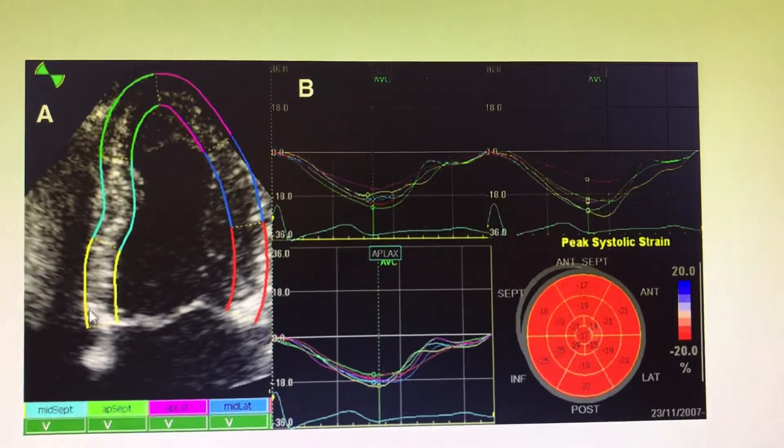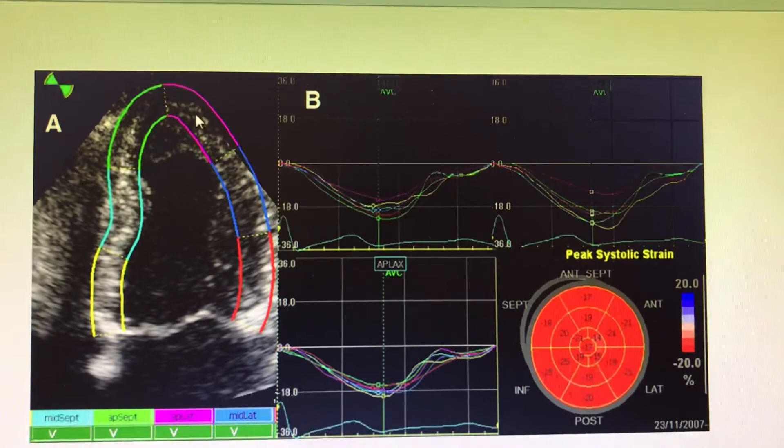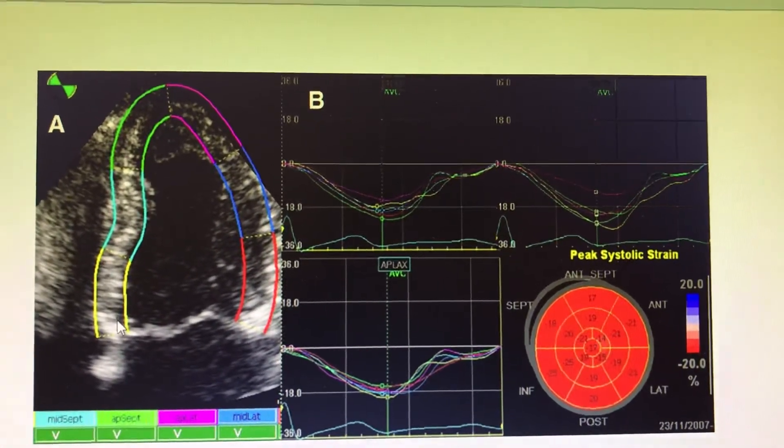Usually the apical 4-chamber view is taken and the normal longitudinal global strain is measured. The mean is taken, similar to how mean ejection fraction is calculated.